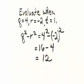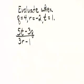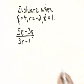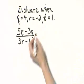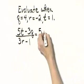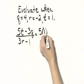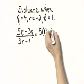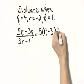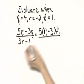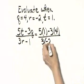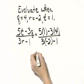And 16 minus 4 is 12. Let's evaluate this expression given these replacement values. So first, I'll insert the replacement values. That's 5 times T is 1 minus 3 times, and then Q is 4, all over 3 times R is negative 2, and then minus 1.